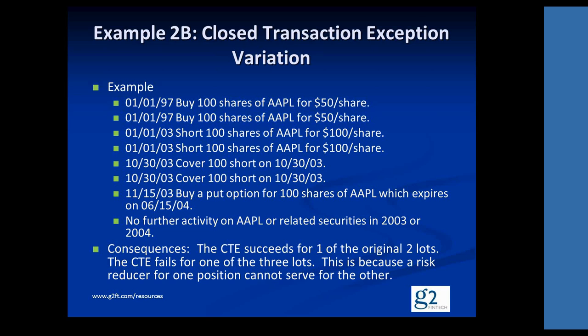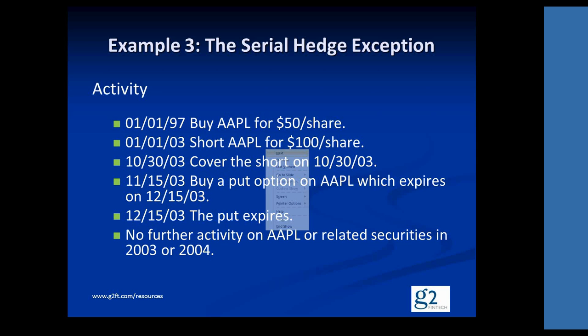The answer is no. It's share for share. Once a risk reducer has been applied to one crossing trade to break the CTE, those same shares in the risk reducer cannot be applied to another crossing trade — it's one or the other. This is actually taxpayer friendly: you can't do one risk reducer and have every crossing trade you have automatically fail. No — it's applied only on a share-for-share basis. So the consequence is the CTE succeeds for one of the original two lots and fails for the other. A risk reducer for one position cannot also serve as a risk reducer for another.